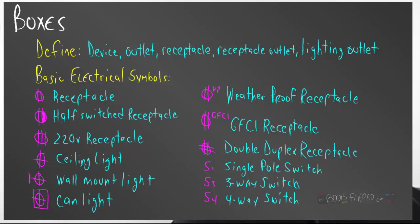So we have a device and a half-switch plug, a 220 receptacle. We have various lights. We have some weatherproof receptacle, a GFCI, a double duplex. And switches, which would be a single pole, a three-way, and a four-way.